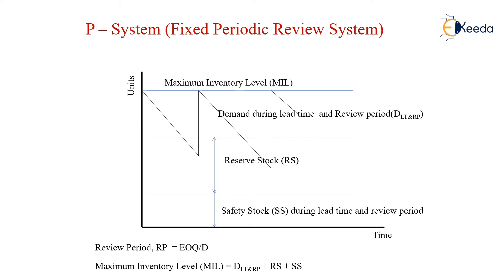So how is the review period found out? It equals the EOQ or Economic Order Quantity divided by the demand. And based upon that value of RP, or the value of review period, we will find out the total maximum inventory level, which equals the demand during the lead time and review period — that is D of LT and RP — plus RS plus SS, which is the demand during the lead time plus the reserve stock plus the safety stock. This gives us the values for this P-System.